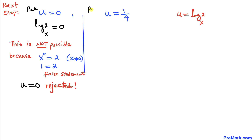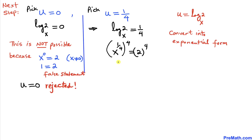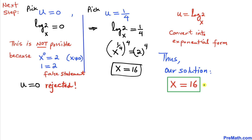Taking u equals 1/4: log of 2 with base x equals 1/4. Converting to exponential form gives x^(1/4) equals 2. Raising both sides to the power of 4, we get x equals 2⁴ equals 16. Therefore, our solution is x equals 16. Thanks for watching, and please subscribe to the channel for more videos!